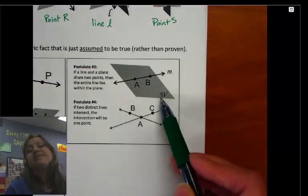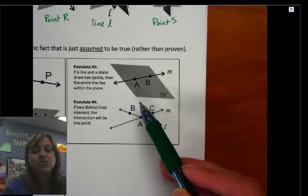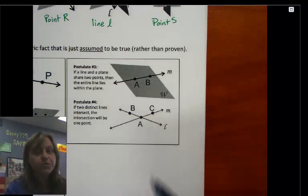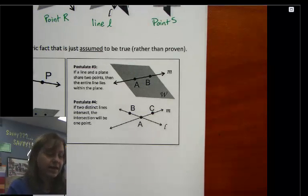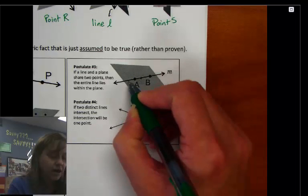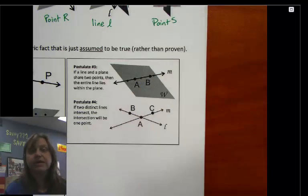Well, if that's the case, then the entire line is going to be contained in the plane. It's not going to go through the plane, but every single point on the line, no matter what I draw on that line, it's going to be in the plane as well, automatic. That's postulate number three.